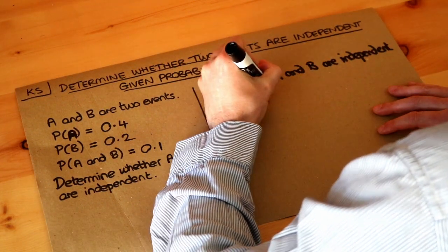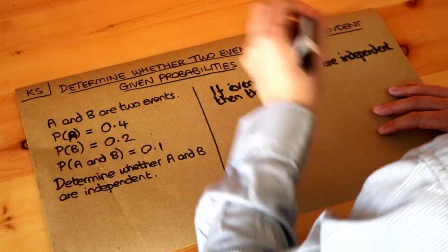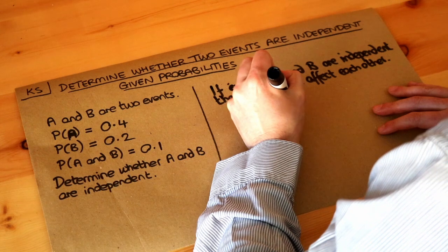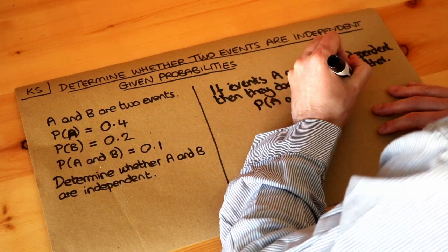We saw that if two events are independent then they don't affect each other, so the outcome of one doesn't affect the outcome of the other. We have this formula here: the probability of A and B is equal to the probability of A times the probability of B.